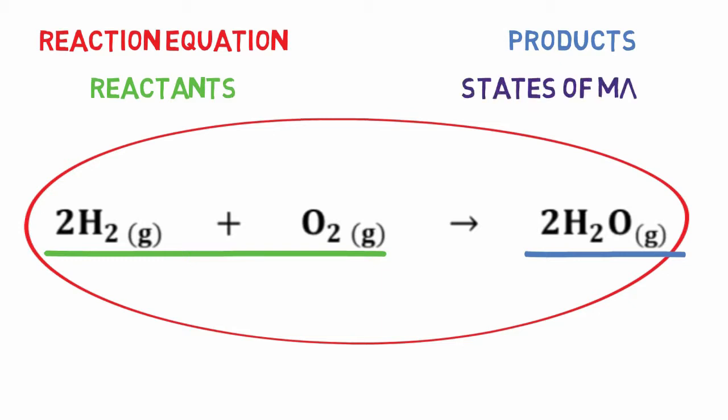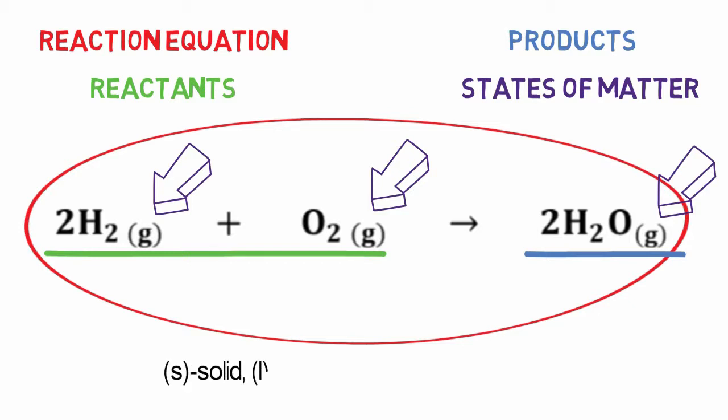When writing reaction equations, be sure to include states of matter for each of the products and reactants. This is done as a subscript after each molecule in the reaction. S denotes a solid, L denotes a liquid, G a gas, and AQ indicates an aqueous or waterborne solution.